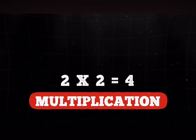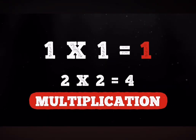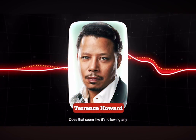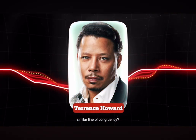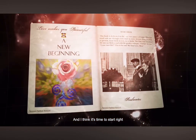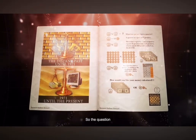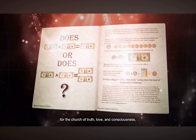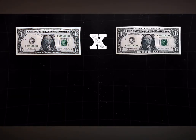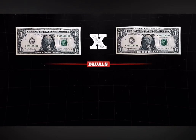Multiplication: 2 times 2 equals 4 and 1 times 1 equals 1. Does that make sense? Does that seem like it's following any similar line of congruency? Can you see where the mistake has occurred? I think it's time to start right at the very beginning and walk through this thing. So the question for the Church of Truth, Love, and Consciousness and all those listening: does $1 times $1 equal $1, or does $1 times $1 equal $2?